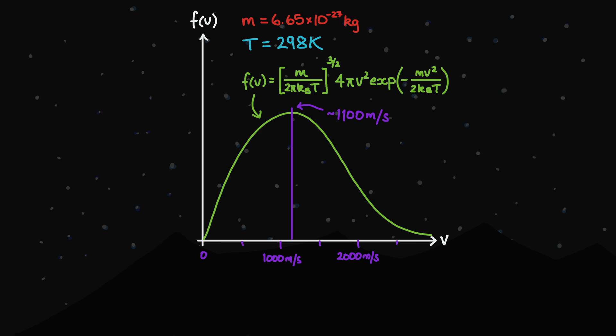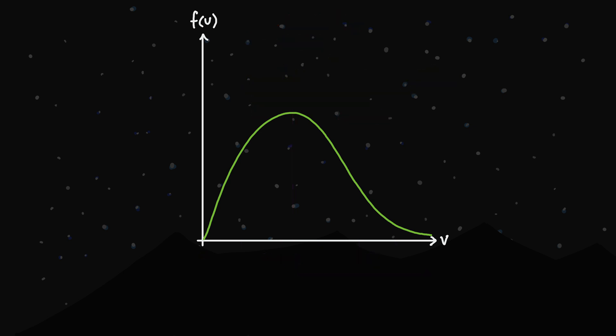And remember, many particles will be moving even faster than this. But I think what's even more interesting is thinking about what happens if we consider different gases or different temperatures. Let's start with temperature. If we increase the temperature of the gas, then the probability density function shifts to look more like this. Firstly, we see that the modal speed increases. This makes sense, because a higher temperature means particles will be generally moving faster.